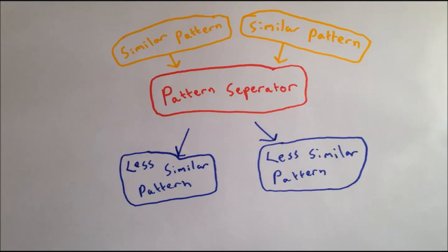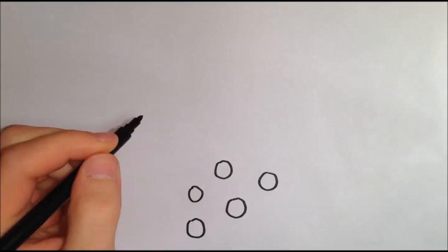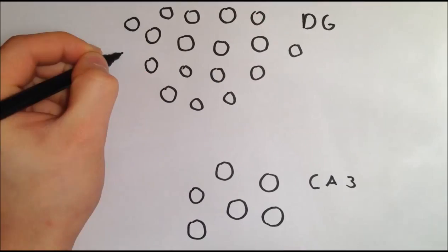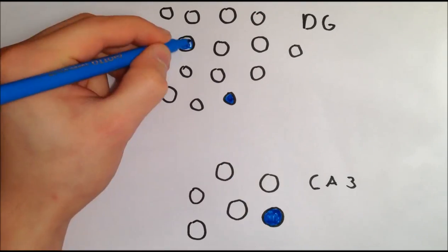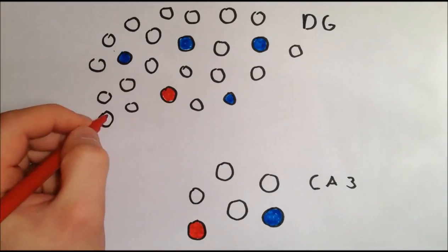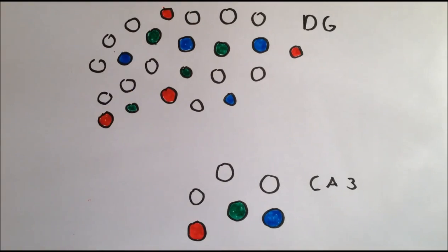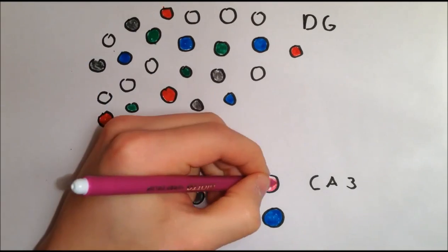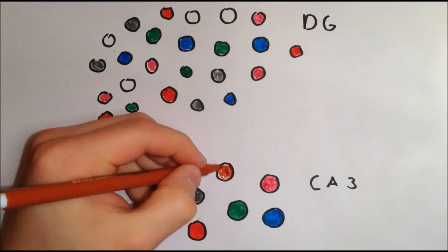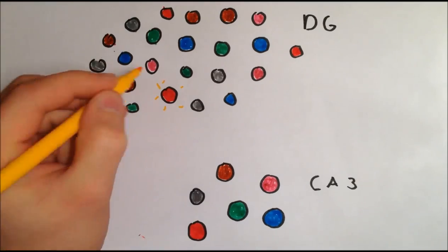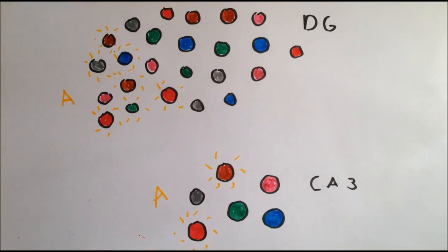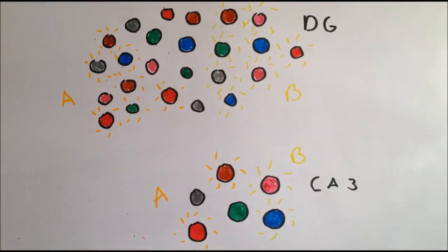This is essentially where a network will take in two patterns and produce an output which is less similar. The dentate gyrus is thought to be this pattern separator. The mechanism of pattern separation in the dentate gyrus is not completely understood, but multiple possibilities have been proposed. One possible mechanism may be that there are many more cells in the dentate gyrus which project onto relatively fewer cells in CA3, meaning the chance that any two populations of cells in the dentate gyrus project to the same cells in CA3 is low.